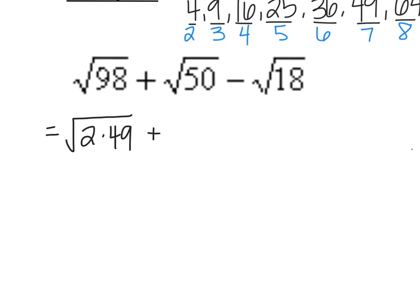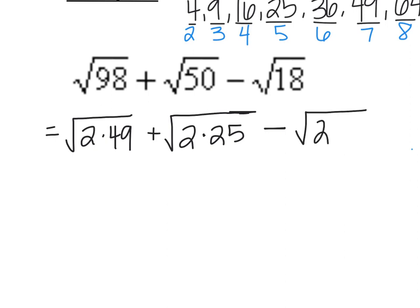Now I'm going to go back and do the same thing for 50. Still looking for a perfect square — I see 1 times 50 and 2 times 25. 25 is a perfect square, so we have 2 times 25. Minus — let's see if we can simplify 18. Going back to y equals, type in 18 divided by x, look at our table: 2 times 9. I've found my perfect squares: 49, 25, and 9.